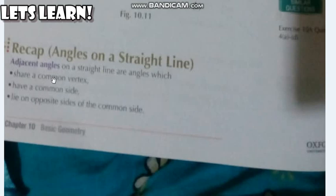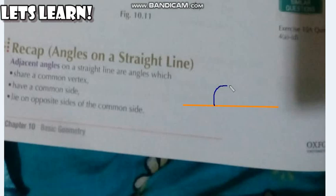Before we investigate this, we will first look at what are basically angles on a straight line. Here is a straight line, and the angle on a straight line is basically half of a circle.